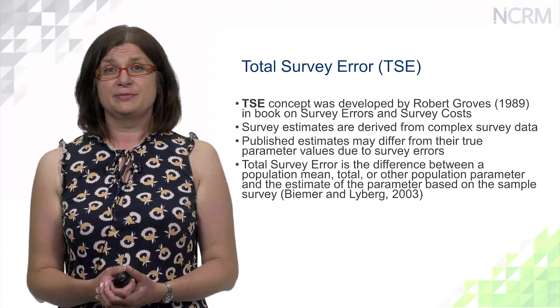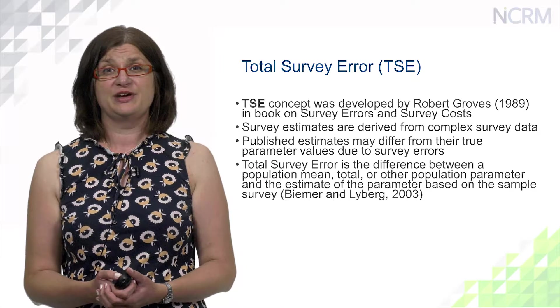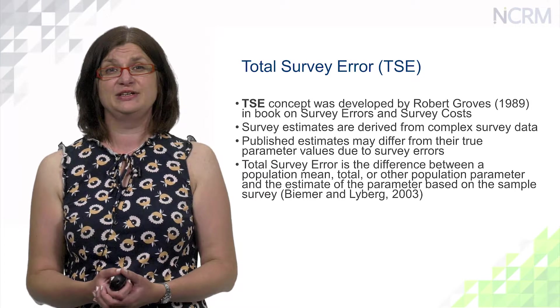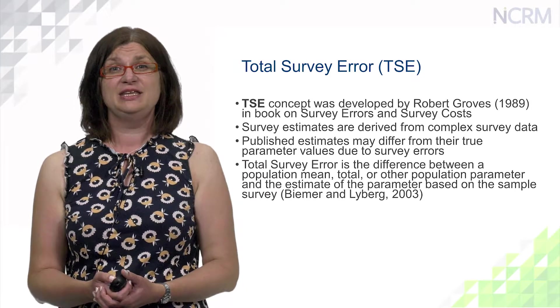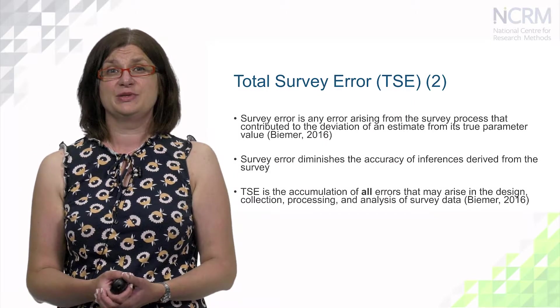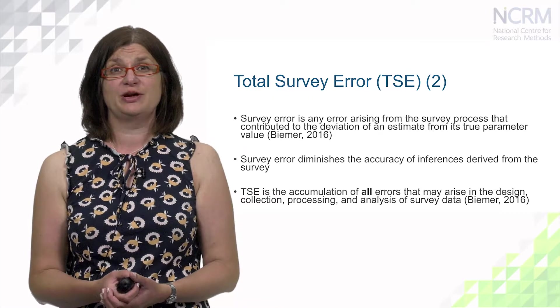The total survey error concept was developed by Robert Groves in 1989 in his book on survey errors and survey costs. Survey estimates are derived from complex survey data, but published estimates may differ from their true parameter values due to survey errors. Total survey error is the difference between a population mean or other population parameters and the estimate of the parameter based on the sample survey.